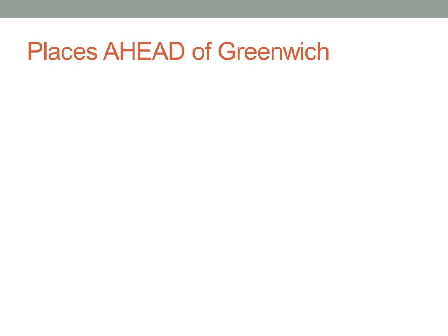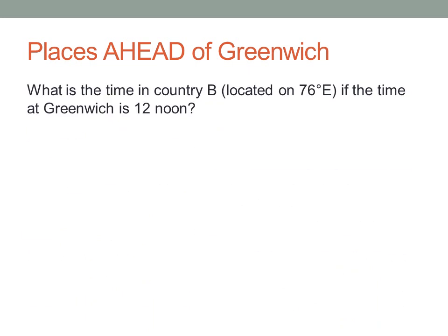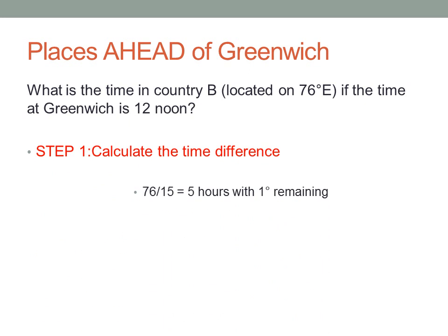Our second worked example states: what is the time in country B, located on 76 degrees east, if the time at Greenwich is 12 noon? Our first step involves calculating the time difference. To do so, we're going to divide 76 degrees by 15, which will give us 5 hours with 1 degree remaining. As you already know, 1 degree of longitude represents 4 minutes. Therefore, the time difference will be 5 hours and 4 minutes.